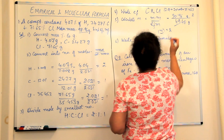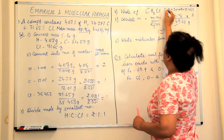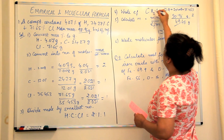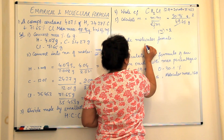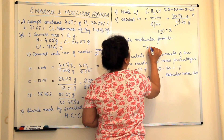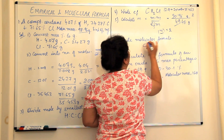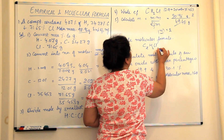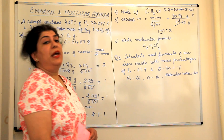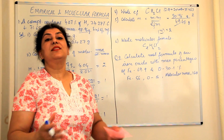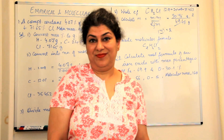Since N is 2, we multiply the complete empirical formula by 2 — each element's subscript by 2. Carbon is 1, so it becomes 2. Hydrogen is 2, multiplied by 2 gives 4. Chlorine is 1, so it becomes 2. Therefore, C2H4Cl2 is the molecular formula of the compound.